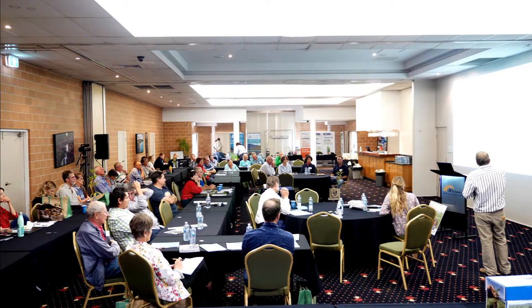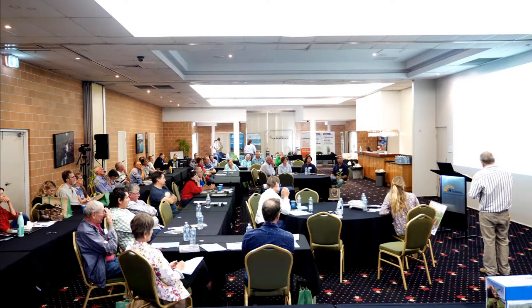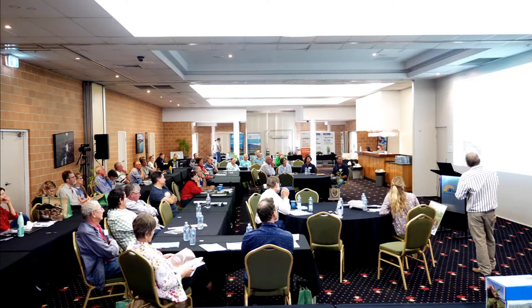Next slide shows some bank scouring, bank collapse and channel avulsion. These are scouring and slumping examples where just the side, because it's so wet, can just slump in. We've had examples down in the Brisbane River where they've let water out of Somerset Dam — during the flow, water is pushed back into the bank through hydraulic pressure, and then they release it too quickly, it drops too quick and the whole thing slumps in. That's worse if you've got a sandy, non-cohesive material — you get seepage outflow and that'll just slump in like that.